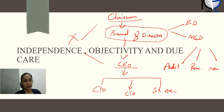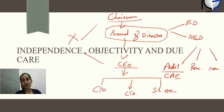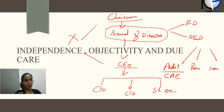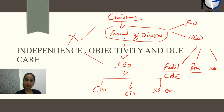The audit committee, as the name suggests, is responsible for the audits of the company — both internal audit and external audit. The person who heads the audit committee is called the CAE, which stands for Chief Audit Executive. The CAE coordinates with both internal and external auditors and discusses audit reports with the board. The audit committee reports to the board via NEDs, and this is how transparency is maintained. The remuneration committee recommends how much the executive directors should be paid — neither overpaid nor underpaid.